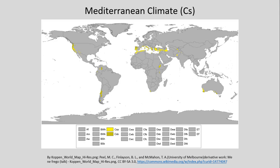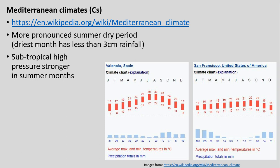Moving on to our C-type climates, first is the Mediterranean climate — one you may have experienced on the west coast of the United States. The distribution is mostly around the Mediterranean Sea in Europe and North Africa, but also on parts of western coasts like our own North America. We see a pronounced dry summer period — as in San Francisco, with hardly any precipitation in summer — but more precipitation in other seasons. Temperature range is fairly mild, as subtropical high pressure is strong in summer months, and weakens to allow low pressure systems to bring winter precipitation.